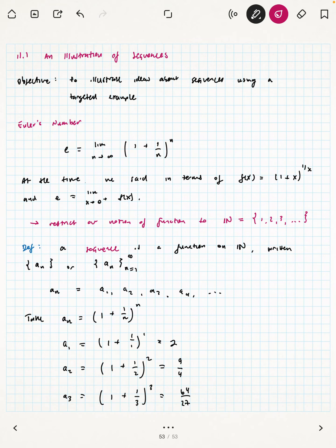So really what we're saying here is this a_n is the ordered list: 2, 9/4, 64/27, etc.